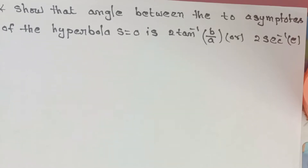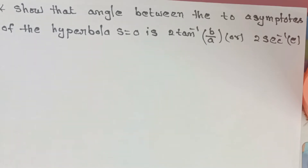The angle between the two asymptotes of the hyperbola S = 0 is 2 tan⁻¹(b/a) or 2 sec⁻¹(e).